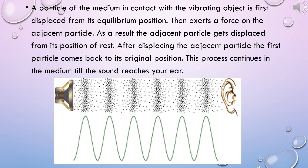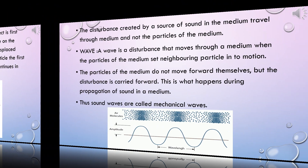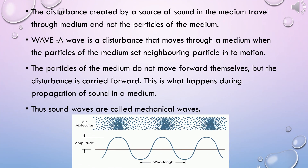Imagine a particle of medium in contact with a vibrating object. It is first displaced from its equilibrium position — that is, its mean position — and then it exerts a force on the adjacent particle. As a result, the adjacent particle gets displaced from its mean position. After displacing the adjacent particle, the first particle comes back to its original position. This process continues through the medium with millions of particles, and the disturbance reaches your ear. The below figure shows how those particles form a wave, representing a sound wave.